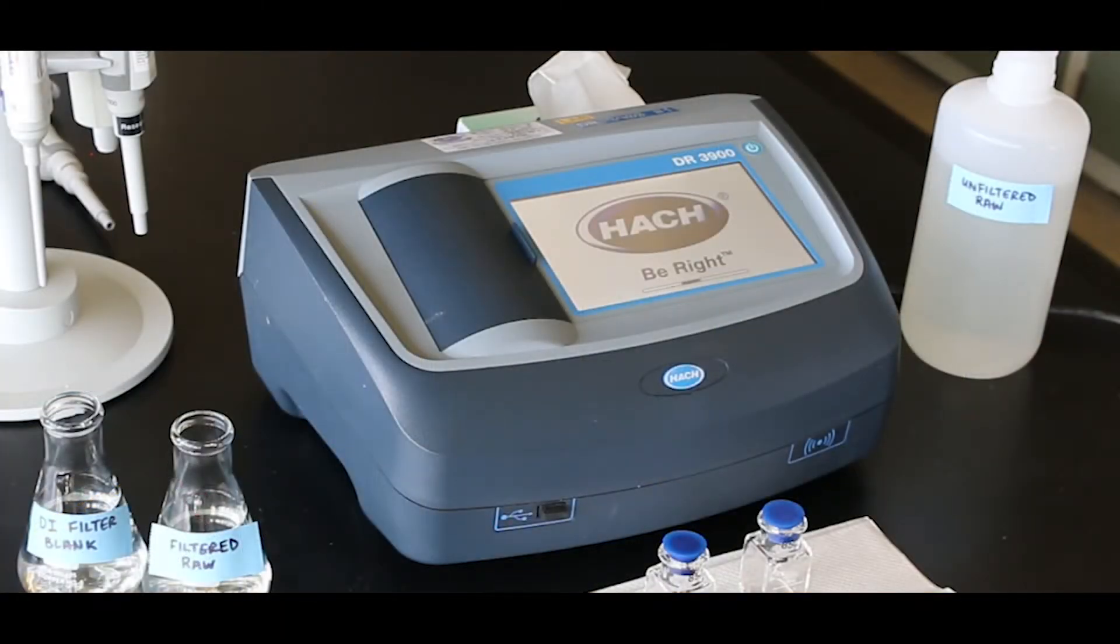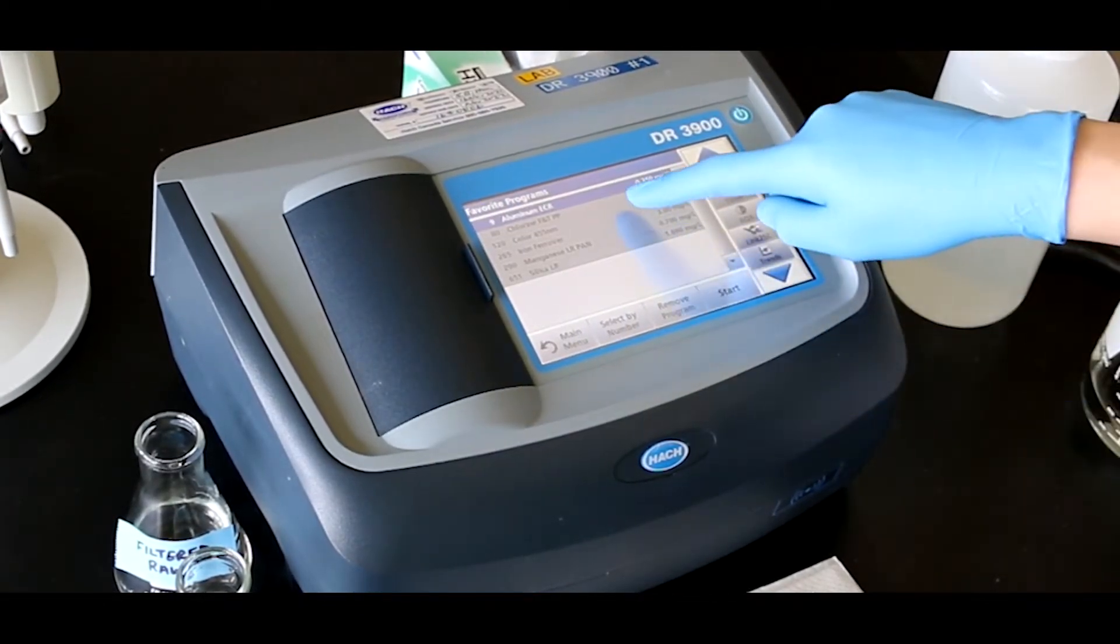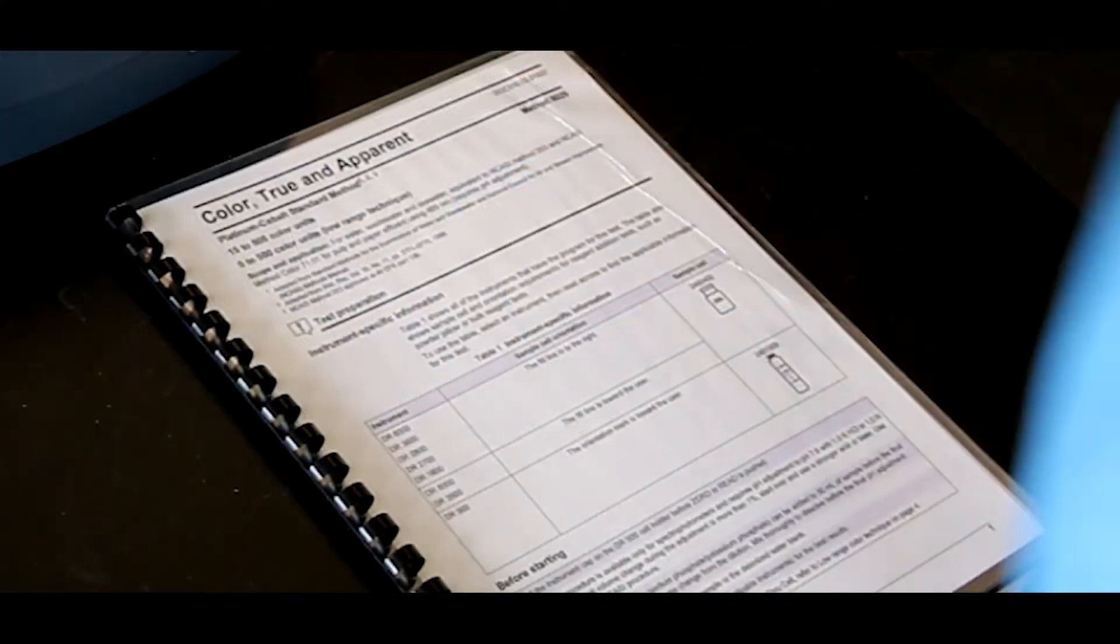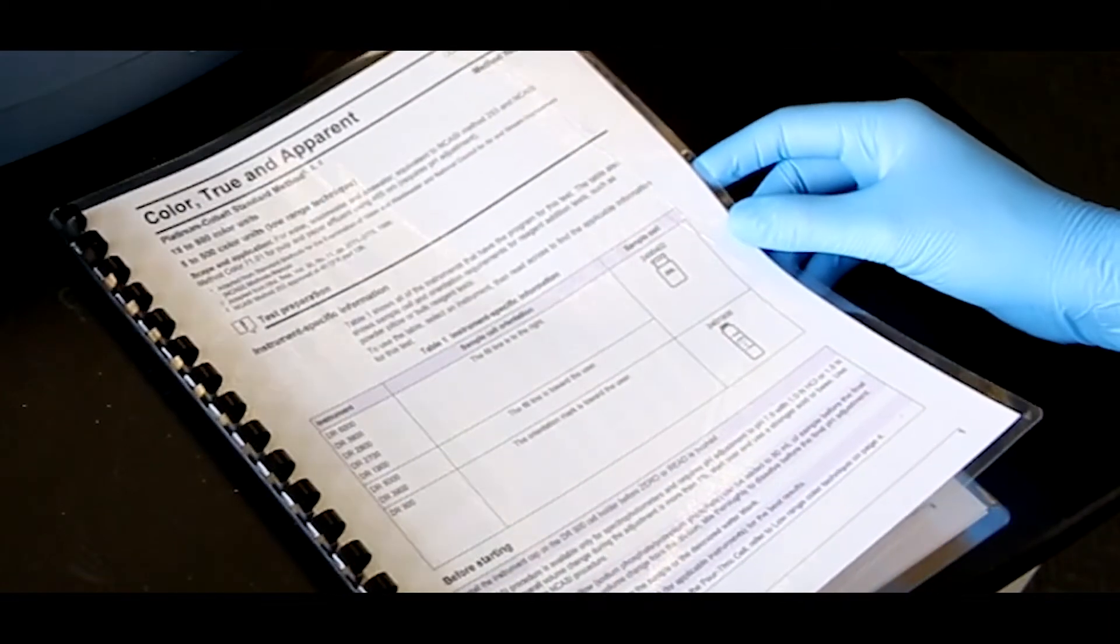We will be using a HACH DR3900 spectrophotometer for our demonstration. Start the instrument and select the appropriate program. Information on sample cells, adapters, and light shields can be found in the method.